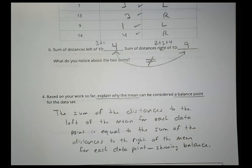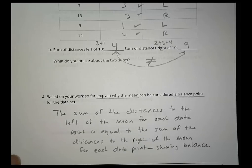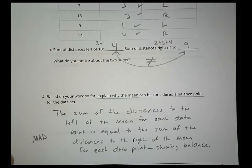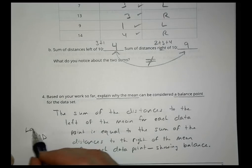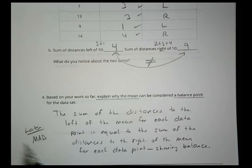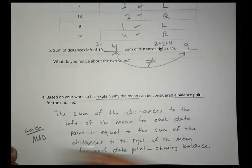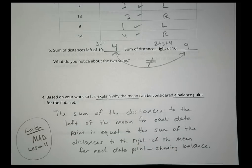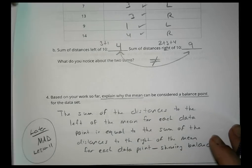We'll get to what this is formally called later. If you're looking it up at home, parents might find something called mean absolute deviation — but that's for the next lesson, Lesson 11. We'll cover that tomorrow.